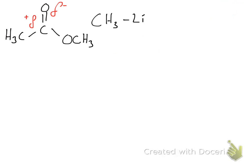Let's look at the organolithium reagent. We have a methyl group here and we have lithium. This methyl side is going to be slightly negative, and this lithium side is going to be slightly positive. So we've got this slightly positive bit here and this slightly negative bit here. We're going to take this bond, and it will attack in a nucleophilic manner the central carbon. The methyl group attacks there and attaches.